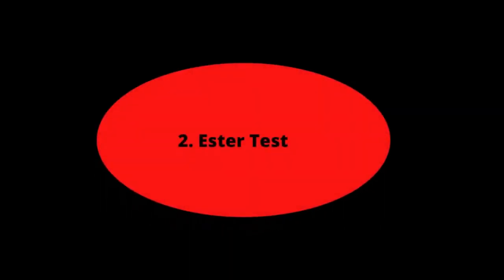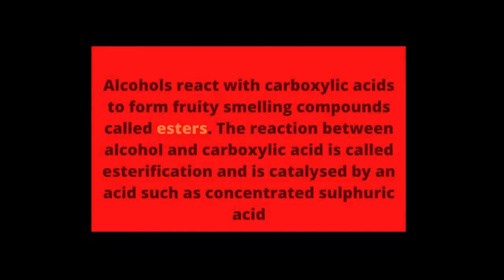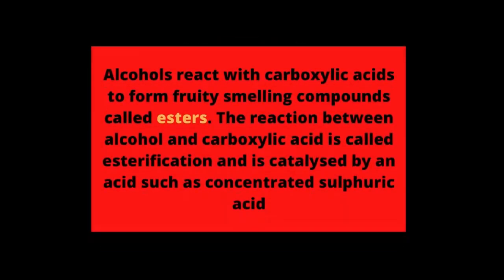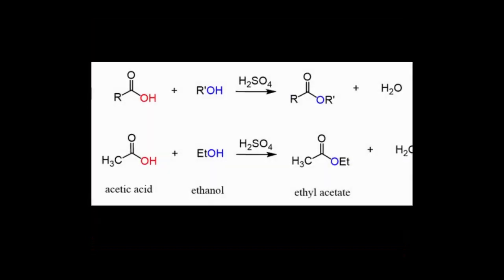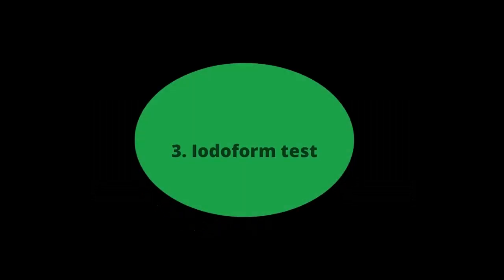The alcohol functional group can also be tested using the ester test. In this test, alcohol reacts with carboxylic acid in the presence of concentrated sulfuric acid, releasing a fruity smell. This fruity smell is an indication of the alcohol functional group.